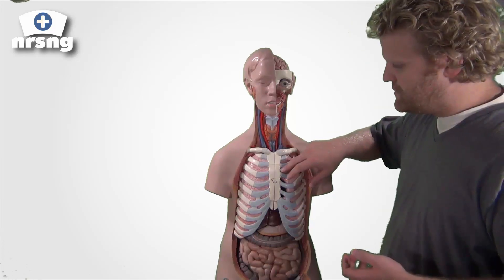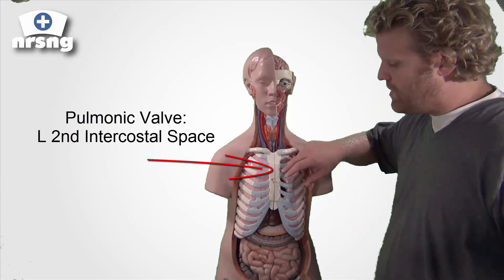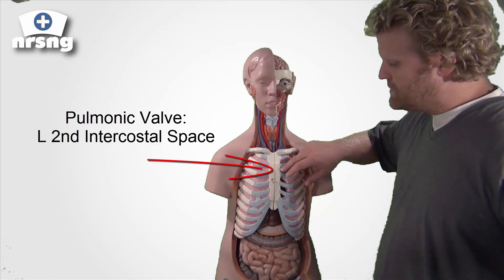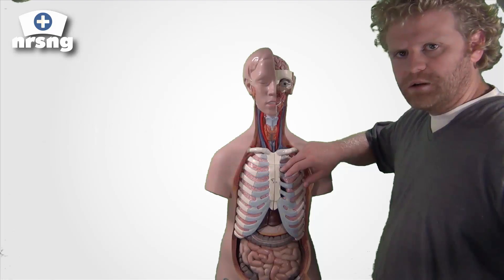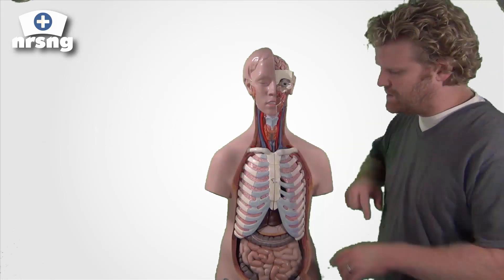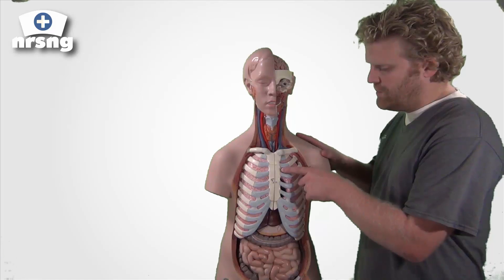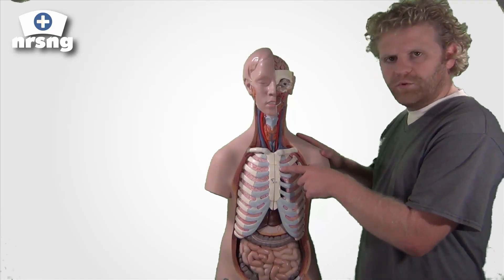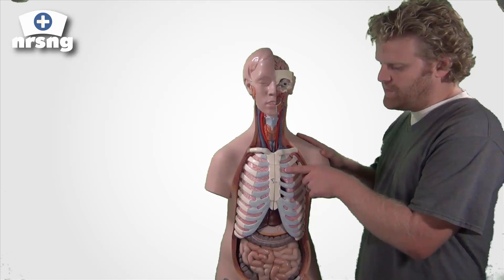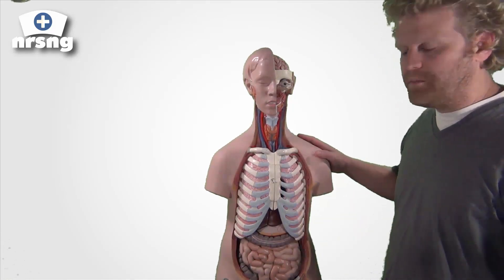The second sound we're going to listen to is the pulmonic valve — the P in APE. The pulmonic valve is going to be at the left sternal border, second intercostal space. To listen for our pulmonic valve, we move our stethoscope over the left sternal border, second intercostal space, and that corresponds to our pulmonic valve.